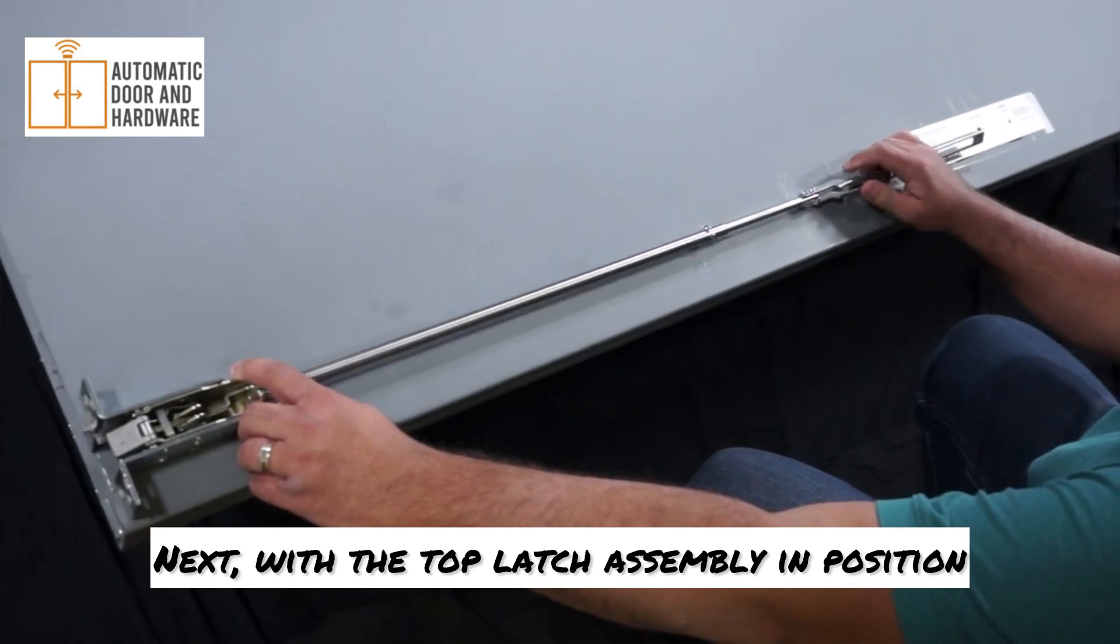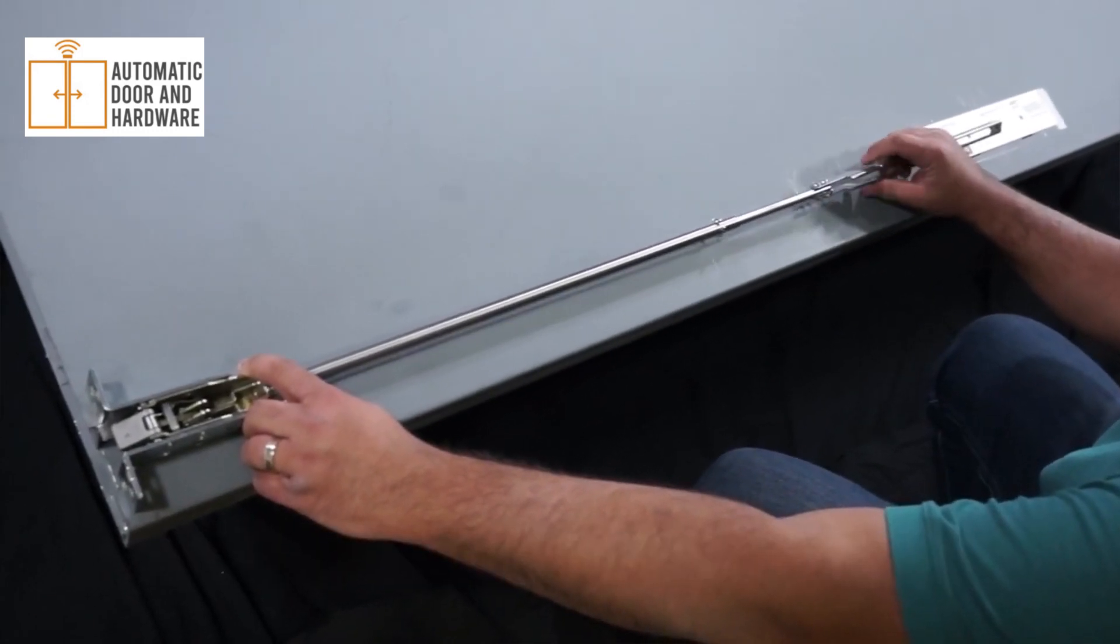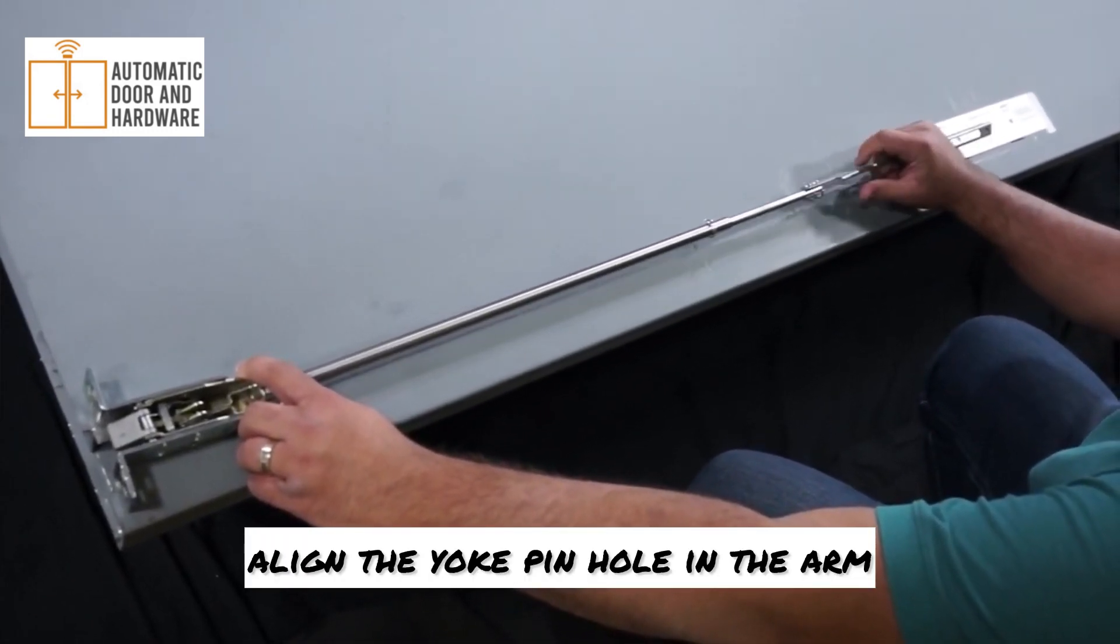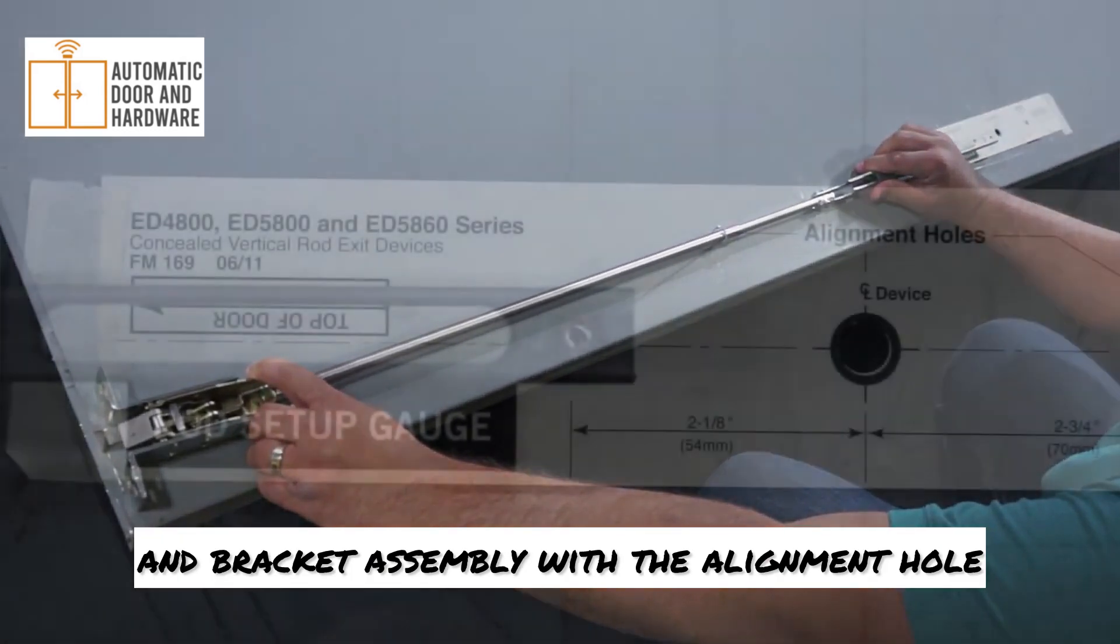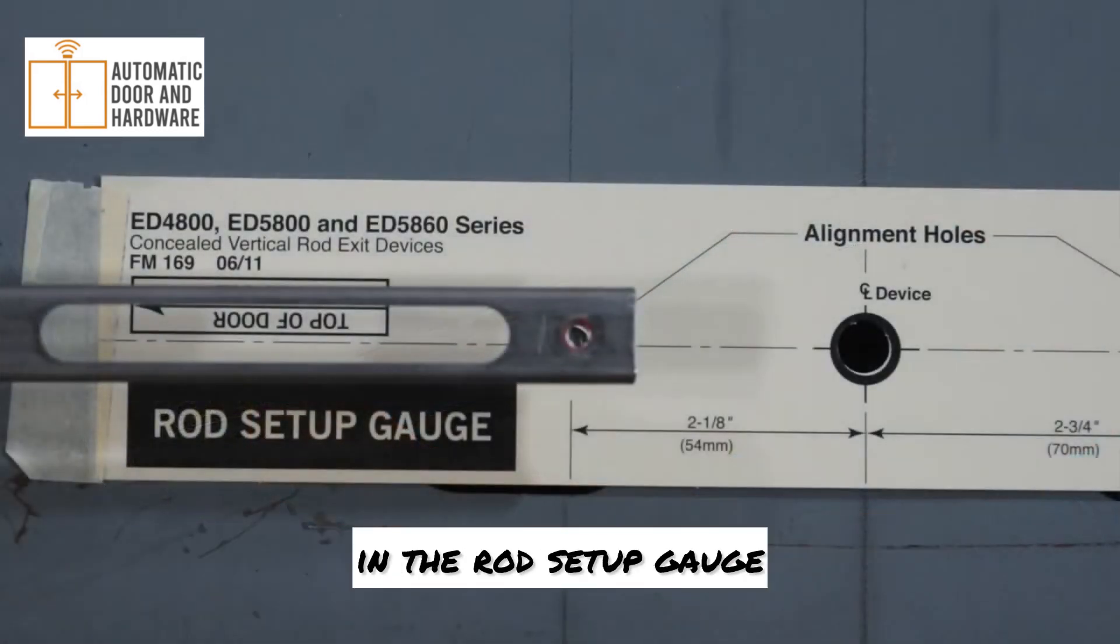Next, with the top latch assembly in position, align the yoke pin hole in the arm and bracket assembly with the alignment hole in the rod setup gauge.